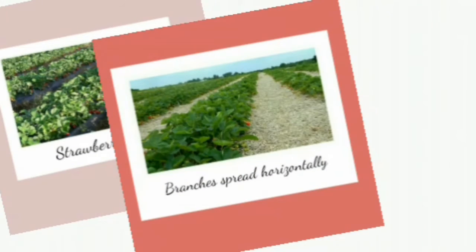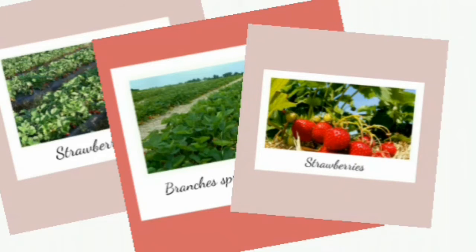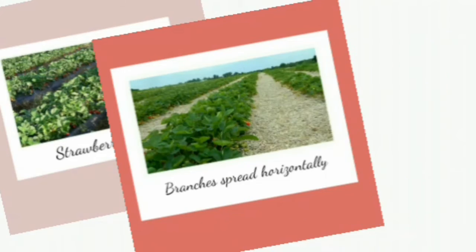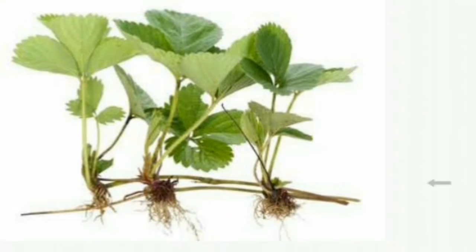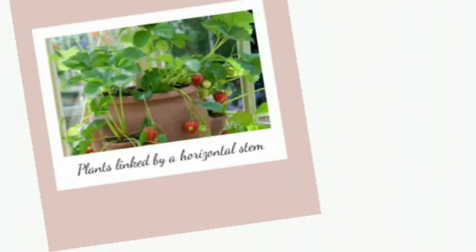Strawberry plants spread horizontally over the ground and have long thin branches bearing axillary buds at the nodes. The nodes are the areas from which roots, shoots, and leaves grow out to produce new plants. This gives rise to a series of new plants, as you can see in the picture. The stem which holds these new plants is called a stolon, and the plants linked by this horizontal stem are called runners.